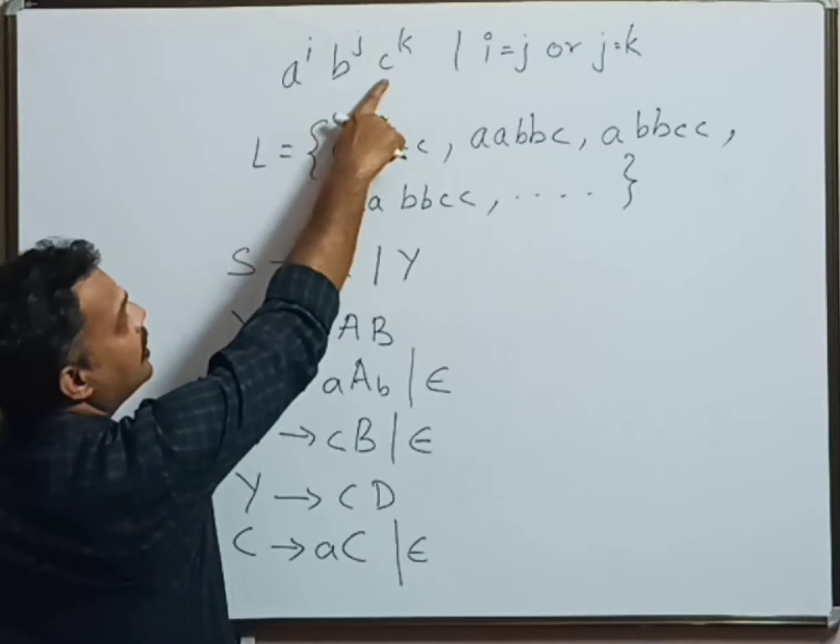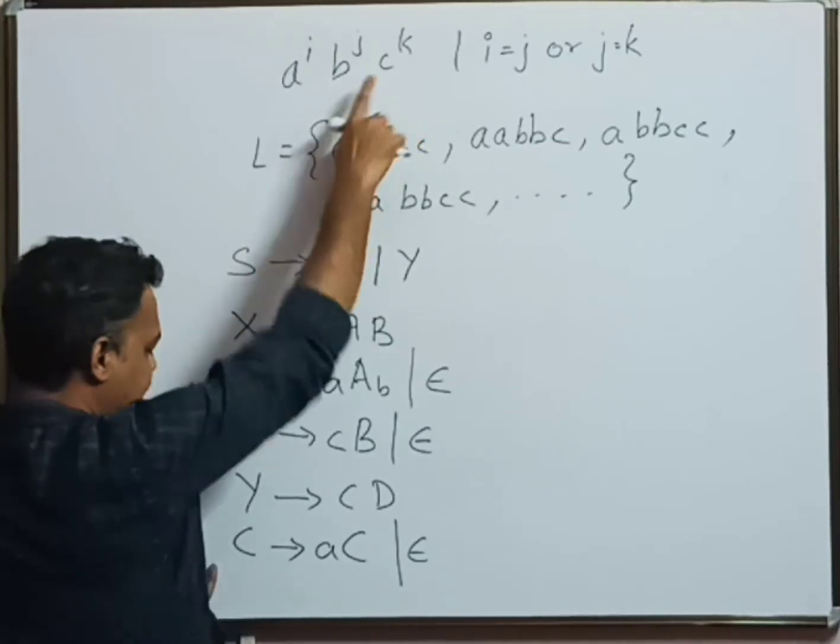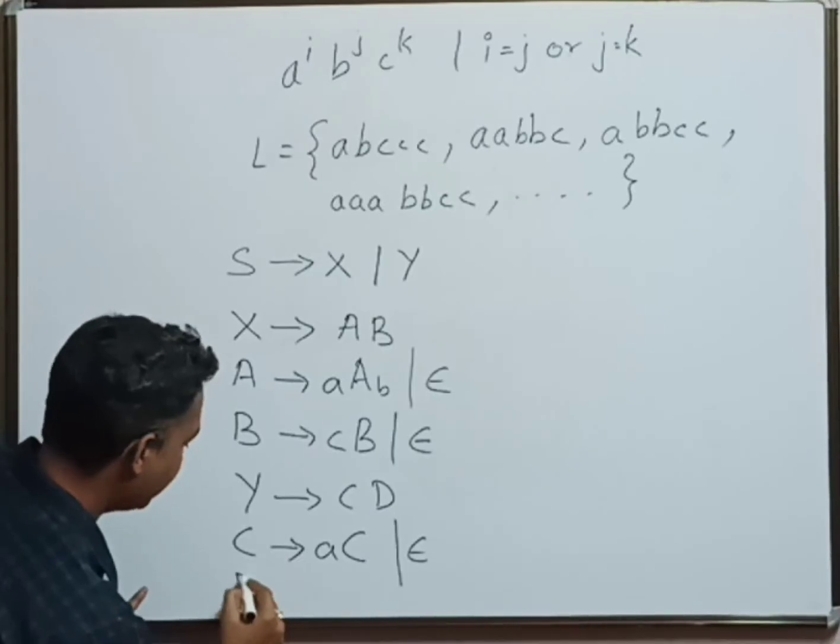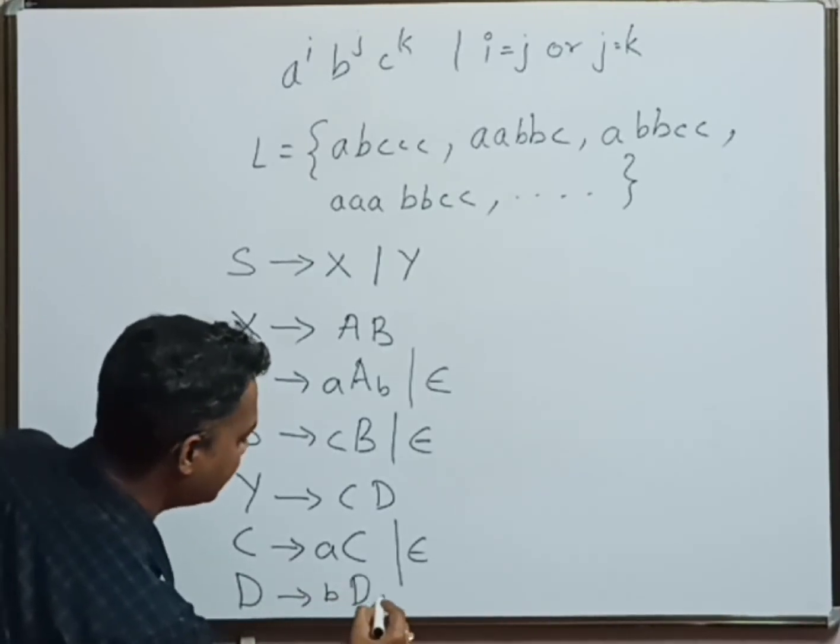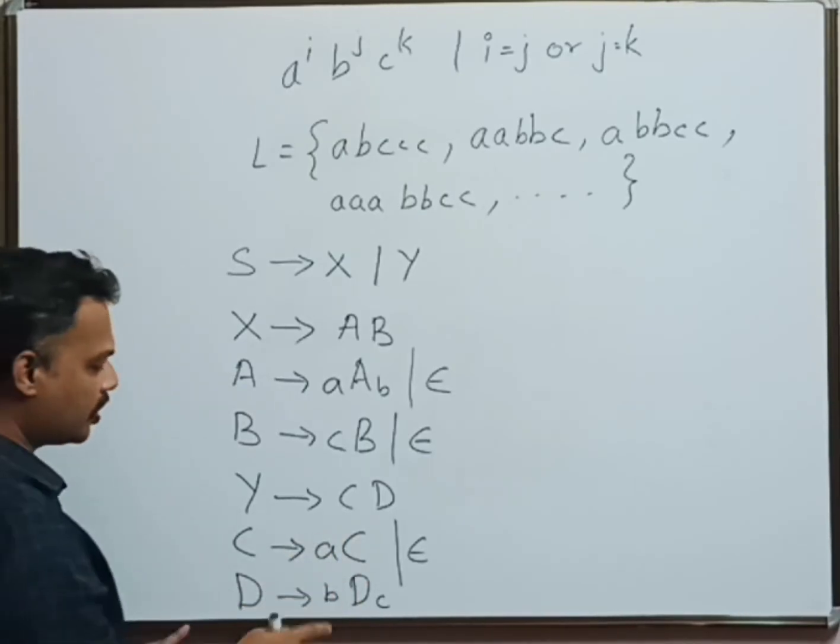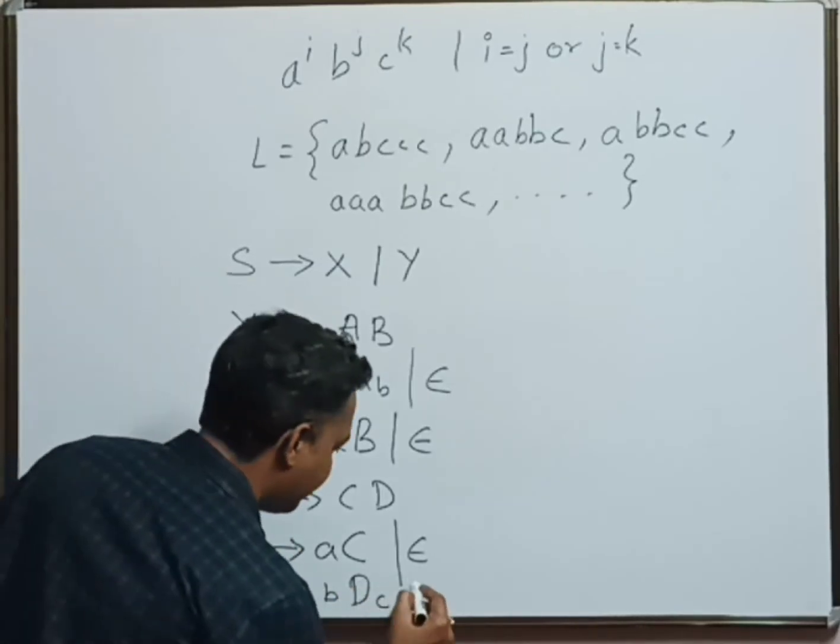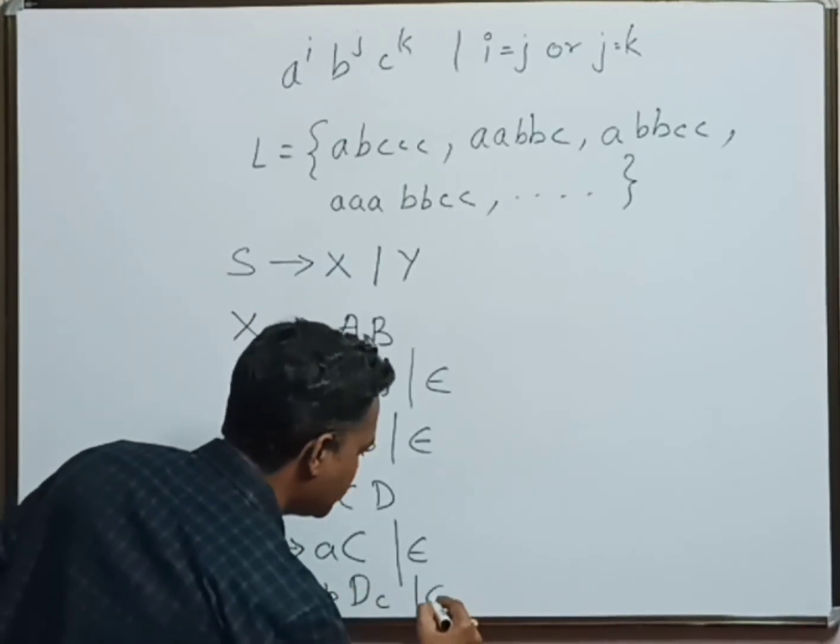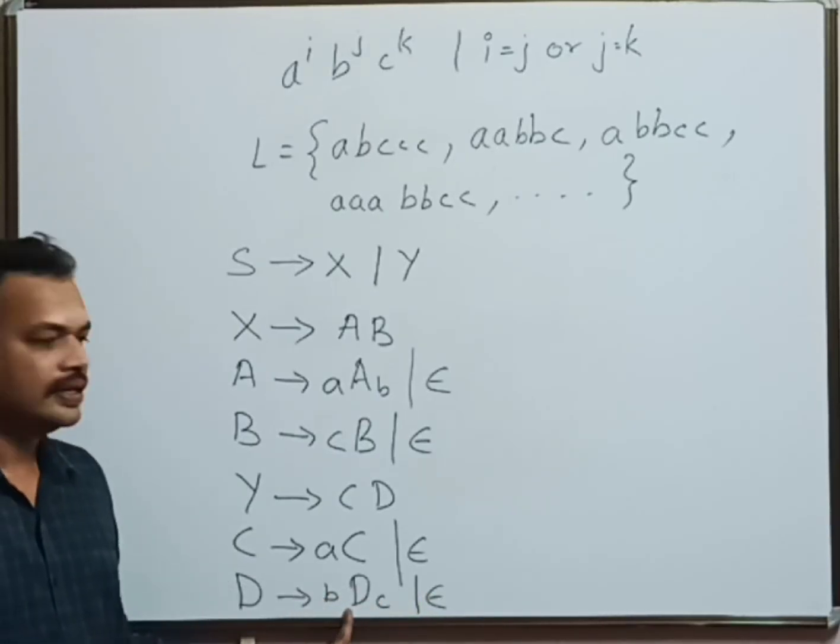Now we have to deal with b and c, balancing b and c. Number of b should be equal to number of c, and that is taken care by D. It is D goes to bDc. Here we can generate possible number of b's and c's, seeing to it that they are balanced. Finally, it has to be stopped or replaced with epsilon so that the recursion ends.